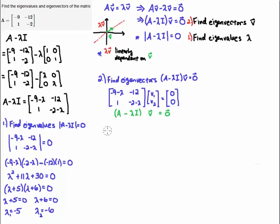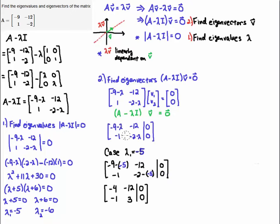Now that we have the eigenvalues, we've got to find the eigenvectors. We'll have two cases: lambda 1 equals minus 5, and lambda 2 equals minus 6. The system A minus lambda I times V equal to the zero vector is written as an augmented matrix, where I subtract lambda off the diagonal entries. The first column corresponds to v1 and the second column corresponds to v2. For the case lambda 1 equals minus 5, I substitute lambda equals minus 5 and simplify to get the augmented system.